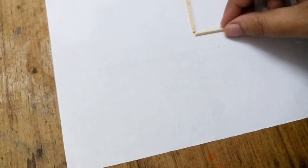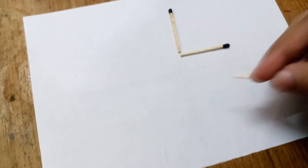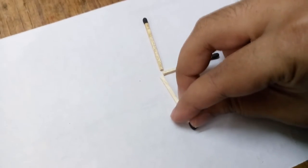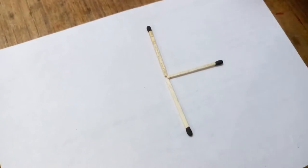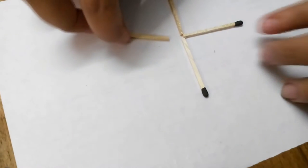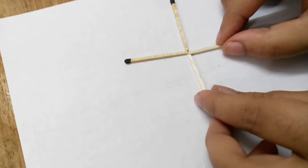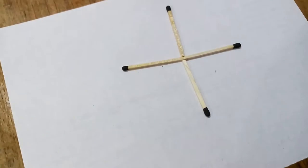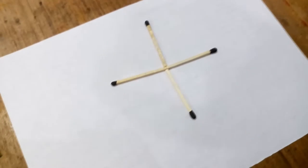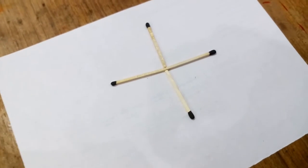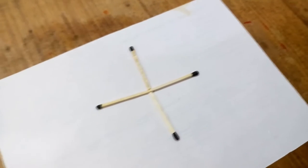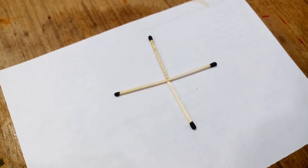The second one is my favorite. Arrange four matches like this, and challenge your friend to make a square between the center of these matches by just moving one match. They can't do anything.